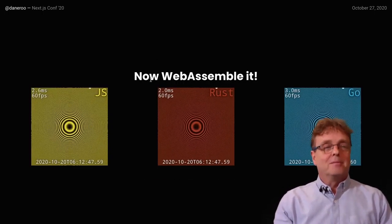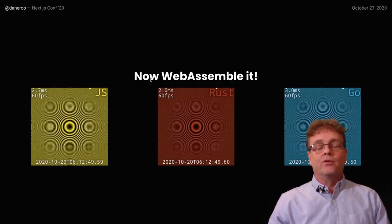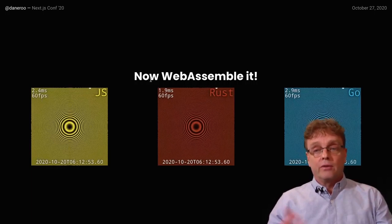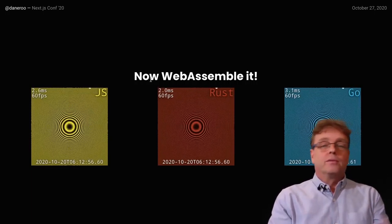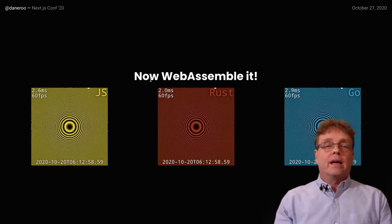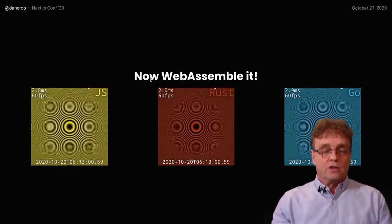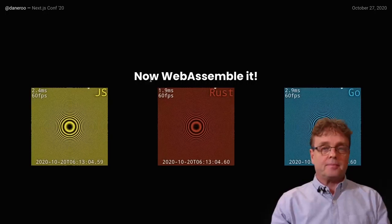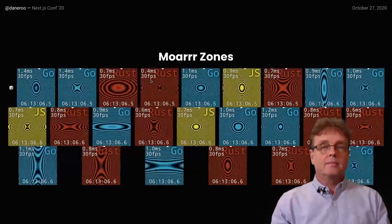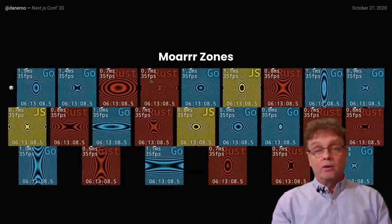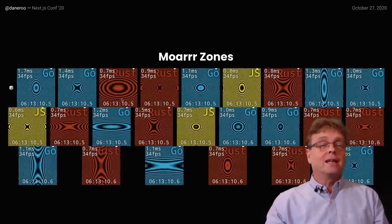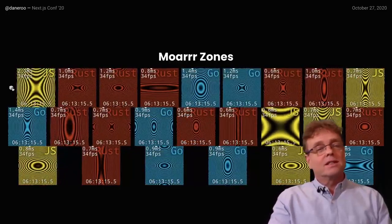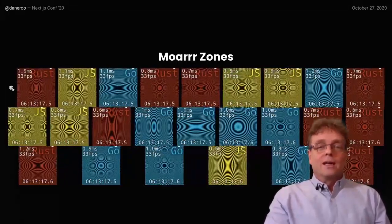Now I'm reusing that same React component but injecting a different render function — either JavaScript, Rust, or Go. That's the crux of the experiment. Once it's a component, I can stick it all over the place and have as many as I want, which is fun to play with. You can see that these things start and stop quite quickly.